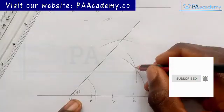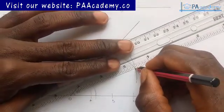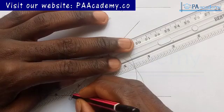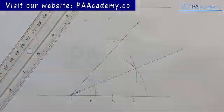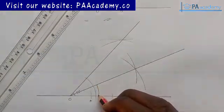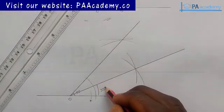And then you draw an arc. From the point of intersection, you draw it to point O. If you do this correctly, you are going to be having this angle to be 25 degrees.